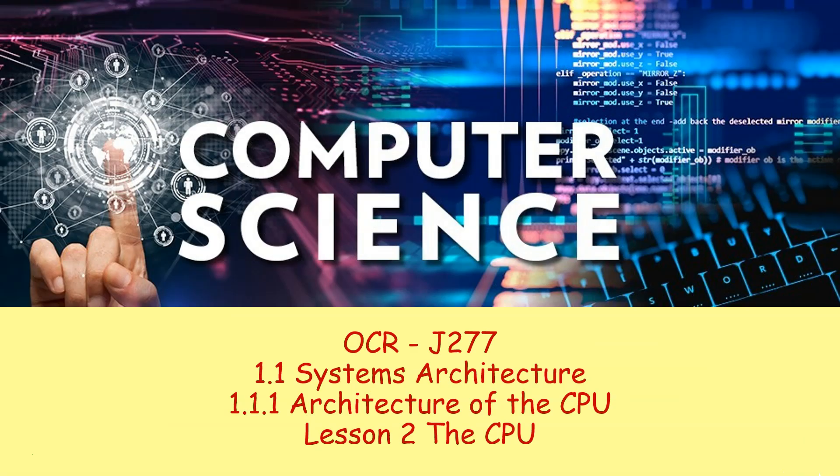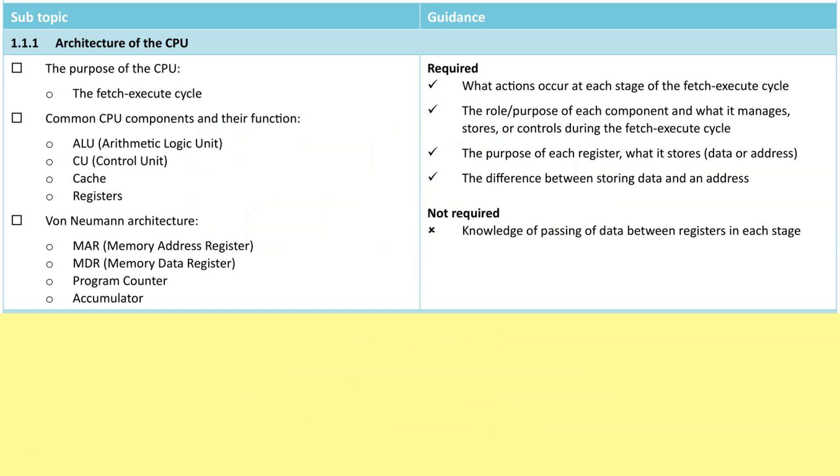Hello and welcome to the next in the series of lessons on architecture of the CPU designed around the new OCR J277 course. Today we're going to be looking at the CPU itself and the common features. So if we take a look here at what we need to learn for this topic, you can see that we're really going to be concentrating on this area here today: common CPU components and their function.